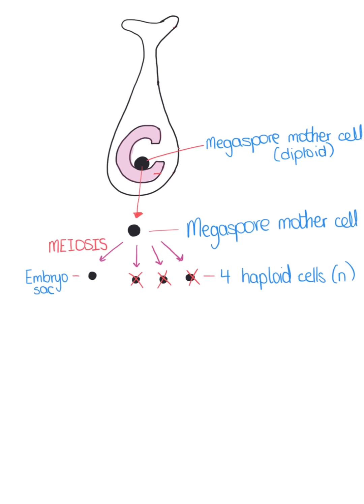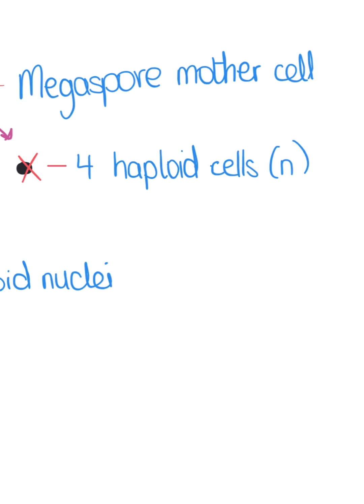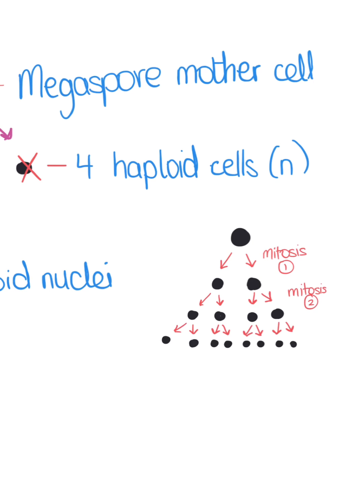The nucleus of the embryo sac divides by mitosis three times to produce eight haploid nuclei. Some students get confused about how it goes from one nucleus to eight nuclei, so here is a quick schematic showing the embryo sac undergoing mitosis once, twice, and a third time to form eight haploid nuclei.